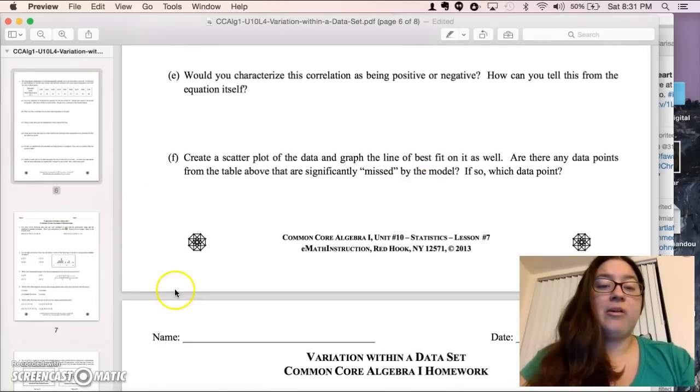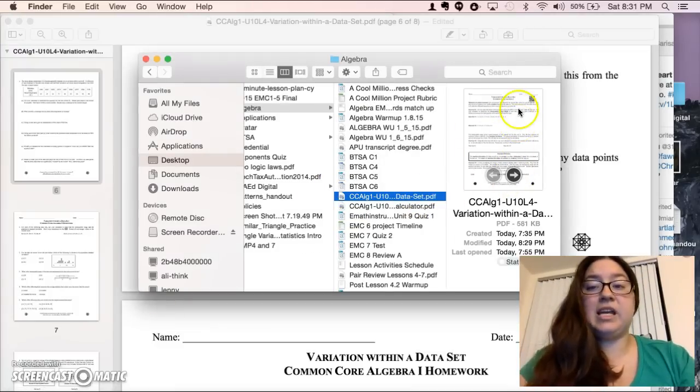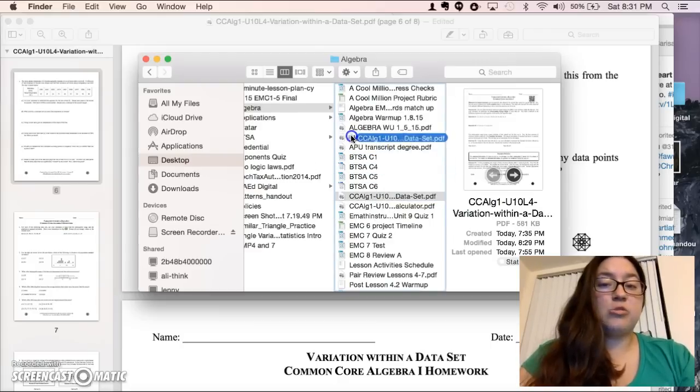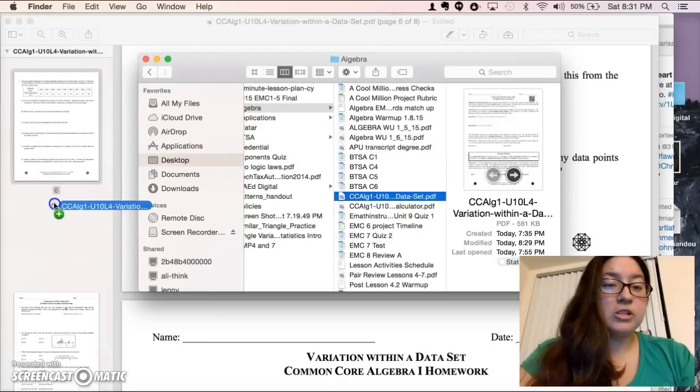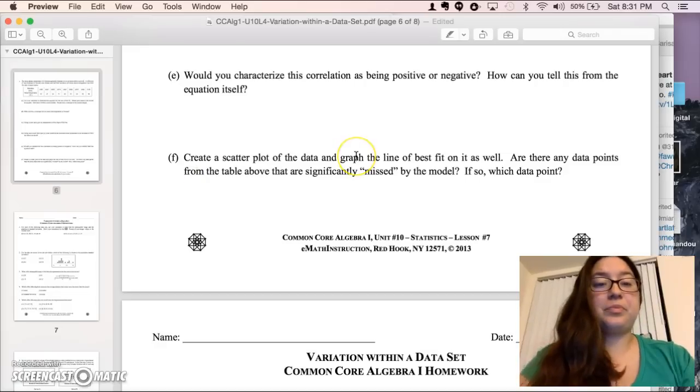I did that by opening my finder and getting a thumbnail of the second PDF I wanted to add. I clicked on it and just dragged it over to right where I wanted to add it. I've already done this, so I'm not going to do it now.